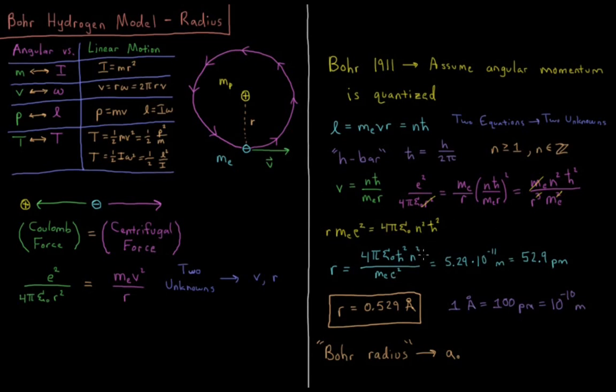If we solve this value for n equals 1, we know π, ε₀, ℏ, Me, and e. This gives us 5.29 × 10⁻¹¹ meters. So that equals 52.9 picometers, a picometer being a trillionth of a meter, or 10⁻¹² meters.